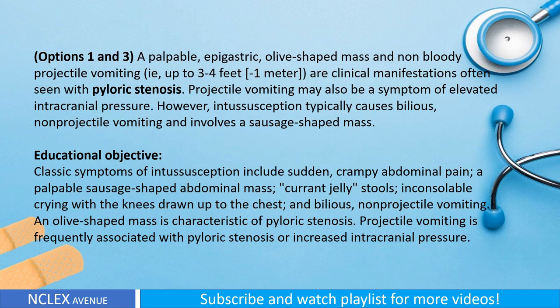Options one and three: a palpable epigastric olive-shaped mass and non-bloody projectile vomiting (up to three to four feet or one meter) are clinical manifestations often seen with pyloric stenosis. Projectile vomiting may also be a symptom of elevated intracranial pressure; however, intussusception typically causes bilious non-projectile vomiting and involves a sausage-shaped mass. Educational objective: Classic symptoms of intussusception include sudden crampy abdominal pain, a palpable sausage-shaped abdominal mass, currant jelly stools, inconsolable crying with knees drawn to the chest, and bilious non-projectile vomiting. An olive-shaped mass and projectile vomiting are characteristic of pyloric stenosis.